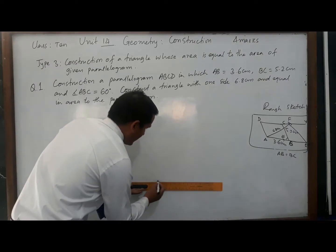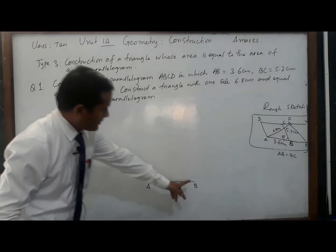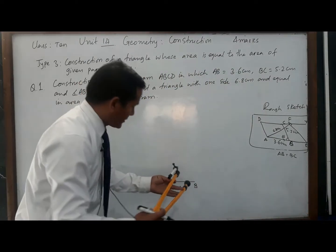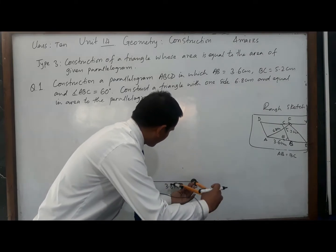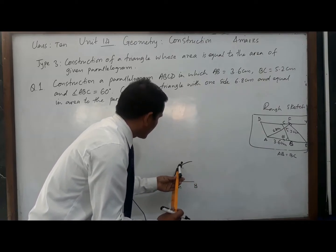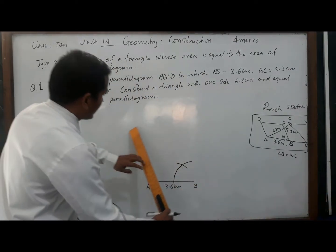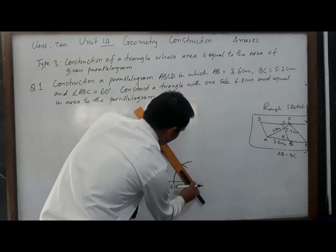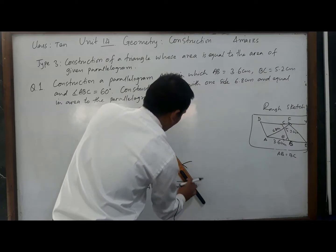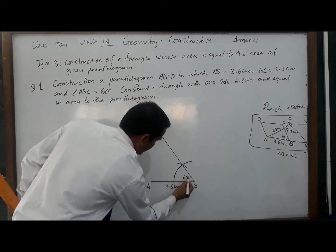Now draw a line segment AB equal to 3.6 centimeters. At B, we have to construct a 60-degree angle with the help of a compass. Draw an arc cutting the line segment AB, then with the same radius cut the previous arc, and through that intersected arc and point B draw a line — this line passes through the intersected arc and point B. Give the name BX. Now we have the angle of 60 degrees.